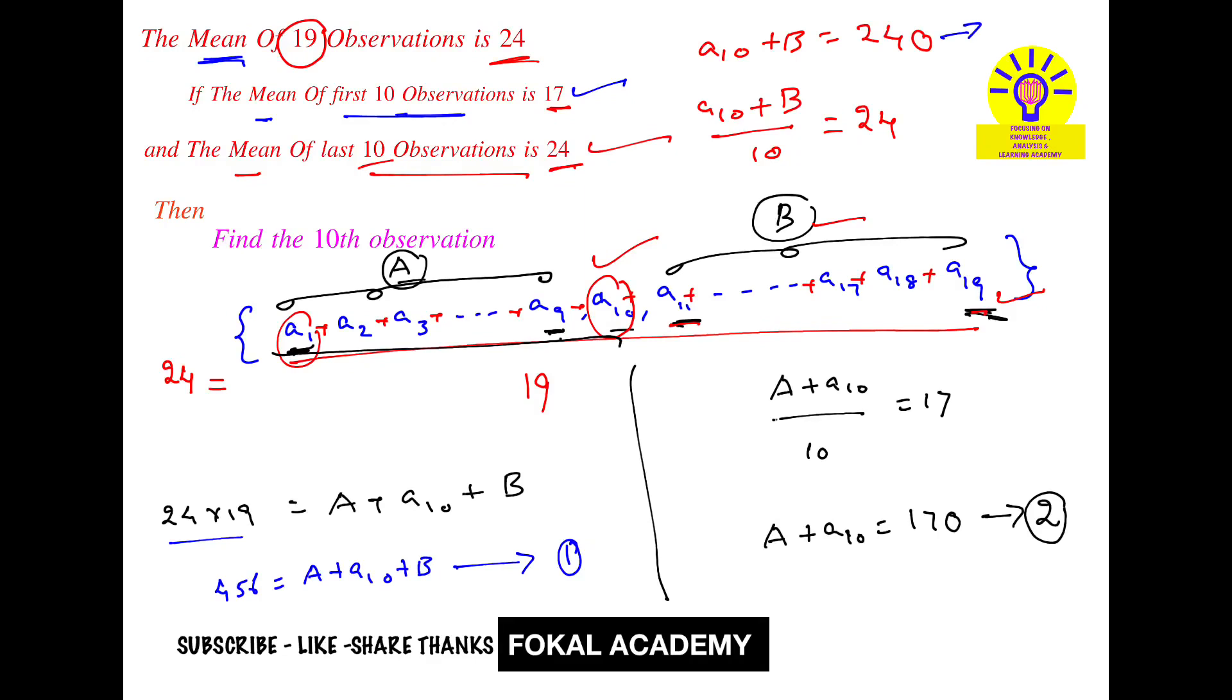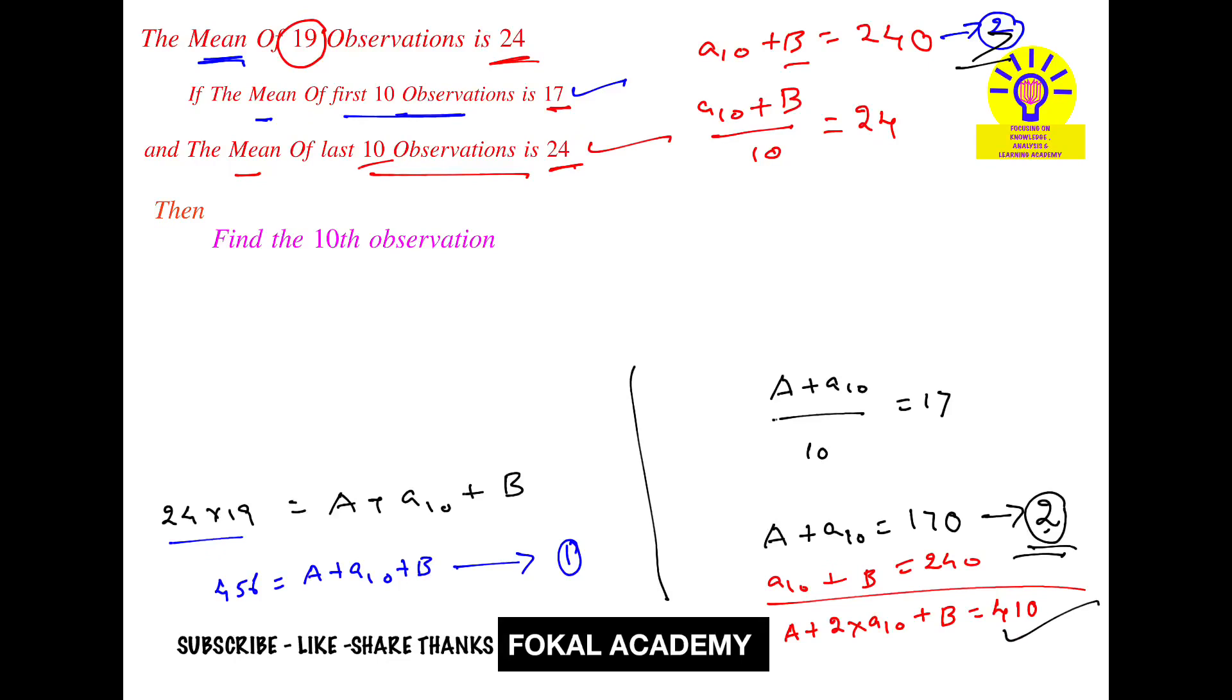Now add Equations 2 and 3. A plus a₁₀ equals 170, and a₁₀ plus B equals 240, giving us A plus 2a₁₀ plus B equals 410. This can be rewritten as (A plus a₁₀ plus B) plus a₁₀ equals 410. From Equation 1, we know A plus a₁₀ plus B equals 456, so substitute this value.